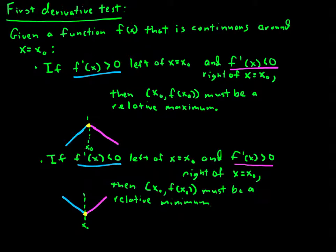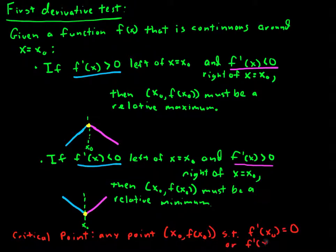Last thing that's worth noting here, we have one more definition that is useful. And that's what we're going to call a critical point. And a critical point is any point x-naught, f of x-naught, such that f prime of x-naught is zero, or f prime of x-naught is undefined.